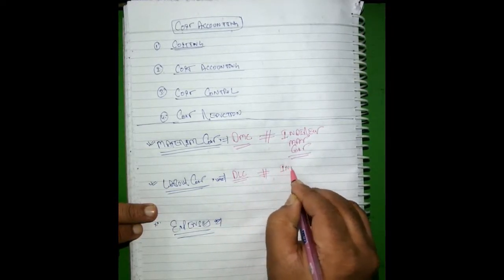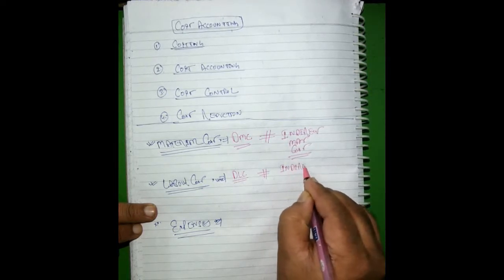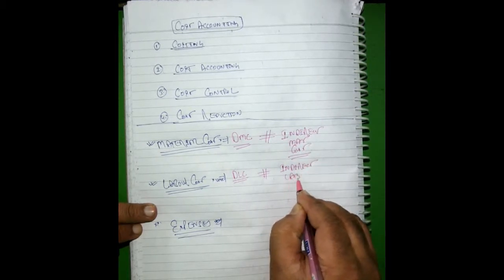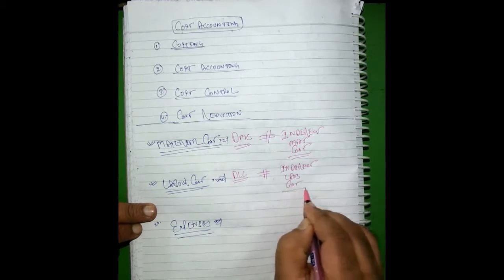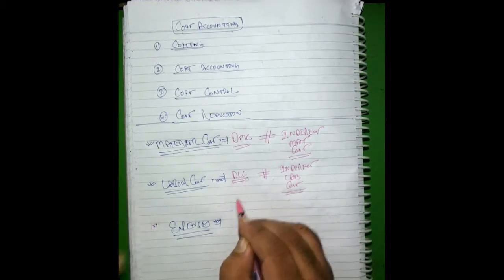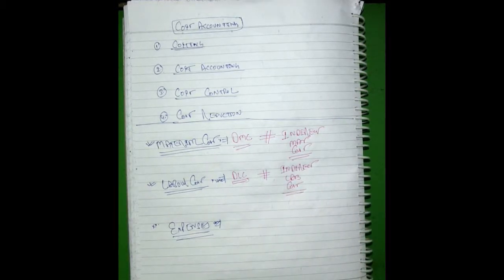Similarly, labor cost is divided into two parts — direct labor cost and indirect labor cost. Such labor cost which is directly involved in manufacturing or service delivery is direct labor cost. For example, in teaching, the teacher's salary is direct labor cost, but the rest of the staff's salaries are indirect labor cost.